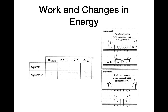Having done all of that analysis, we can fill in the grid. The work done by the hands — the net external work on the systems — is positive in both cases. That means the change in total energy is positive in both cases, since net external work equals change in total energy. For system two, the change in potential energy is zero because there is no spring and the blocks aren't moving up or down, so gravitational potential energy doesn't apply either.